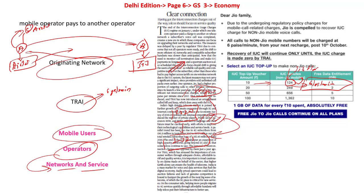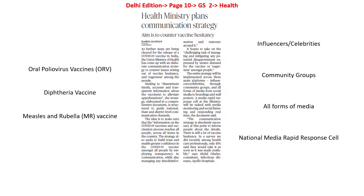Now let's look into the next article: 'Health Ministry Plans Communication Strategy.' The Union Ministry of Health has come up with an elaborate communication strategy to counter issues arising because of vaccine hesitancy and eagerness among the people. The important question is: what is vaccine hesitancy?